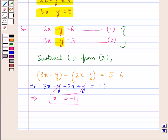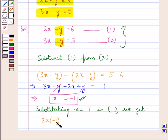Now to get the value for y we would substitute the value of x in any of the two equations 1 and 2. Substituting x equal to minus 1 in equation 1 we get 2 multiplied by minus 1, that is in place of x here we put minus 1, minus y is equal to 6.